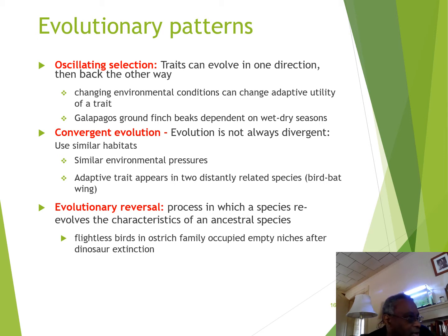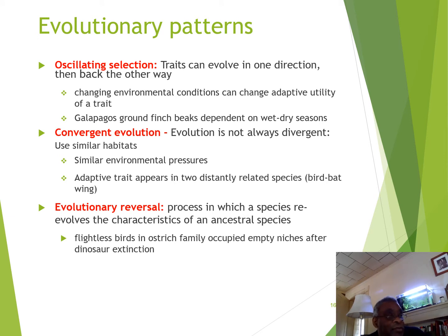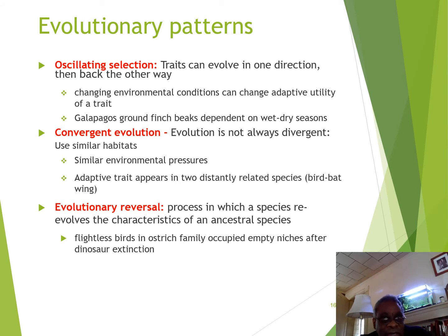Convergent evolution is another major pattern. Evolution doesn't always diverge — animals in a similar habitat may face such strong selective pressures that they end up looking very similar. A bird wing and bat wing is one example. Another good example is whales and dolphins compared to fishes: they're all entirely aquatic, and the selective pressures of a water environment force a similar body shape — both are basically torpedo-shaped with fins — even though they are distantly related.